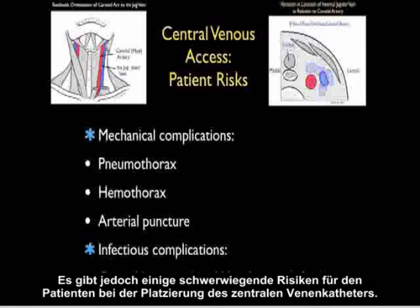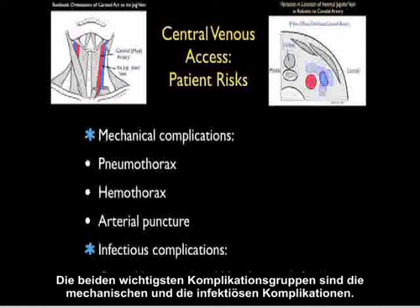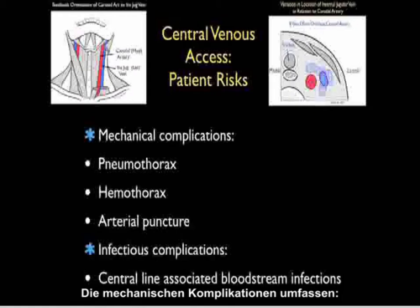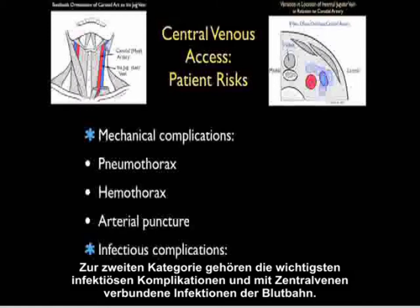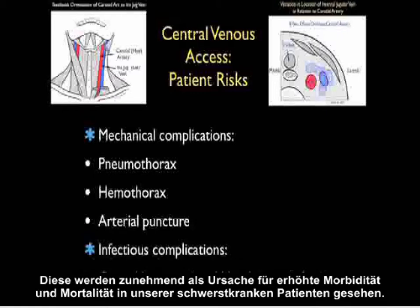However, there are serious patient risks involved with placement of a central venous catheter. The two main groups of complications are mechanical and infectious. Mechanical complications include pneumothorax formation, hemothorax formation, and inadvertent arterial puncture with hematoma formation. Central line-associated bloodstream infections are an increasingly recognized cause of increased morbidity and mortality in our sickest patients.